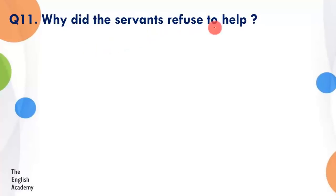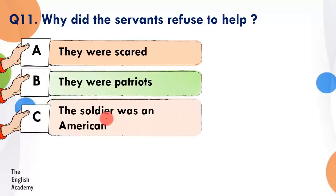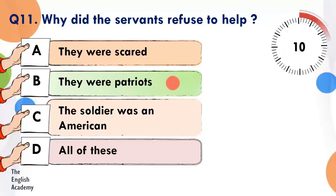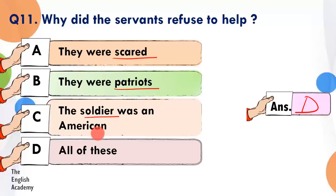Question number 11: Why did the servants refuse to help? Option A: they were scared. Option B: they were patriots. Option C: the soldier was an American. Option D: all of these. The answer is Option D — all of these. Wo dar gaye the ki agar wo kisi American soldier ko treat karenge toh unhein sarkar pakar sakti hai. Wo desh bhakt the, apne desh se pyaar karte the, aur woh soldier unka bada dushman tha — isliye unhone madad karne se refuse kar diya.